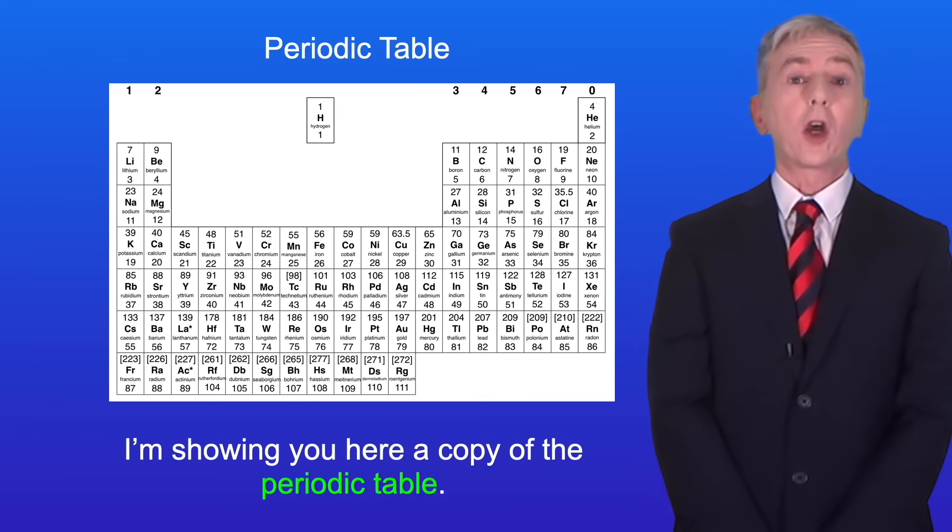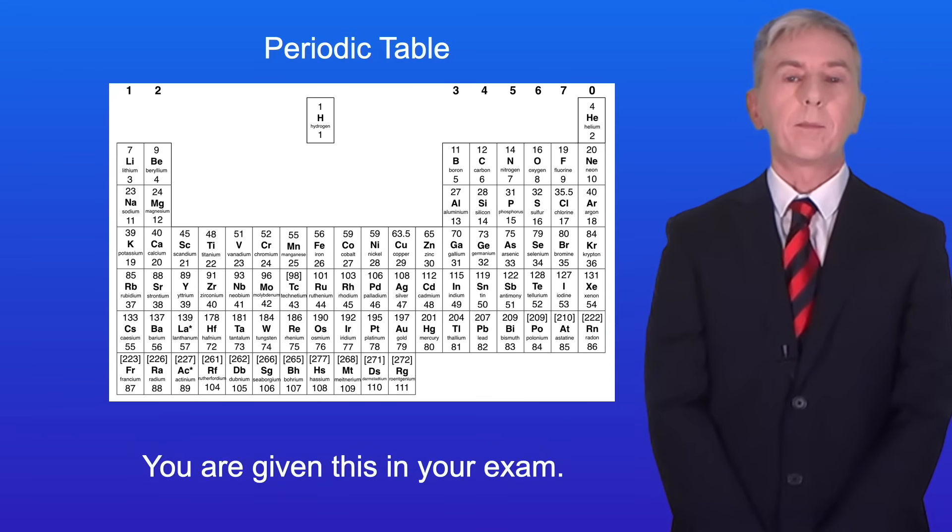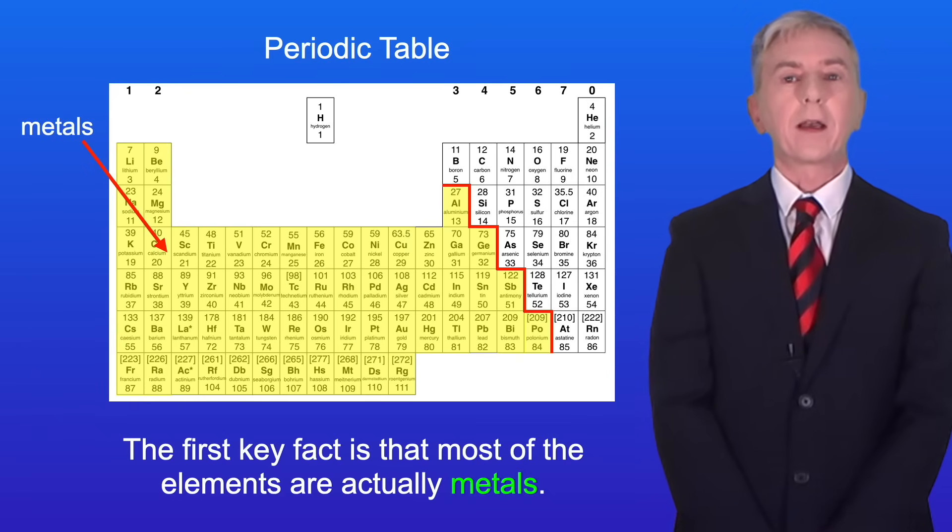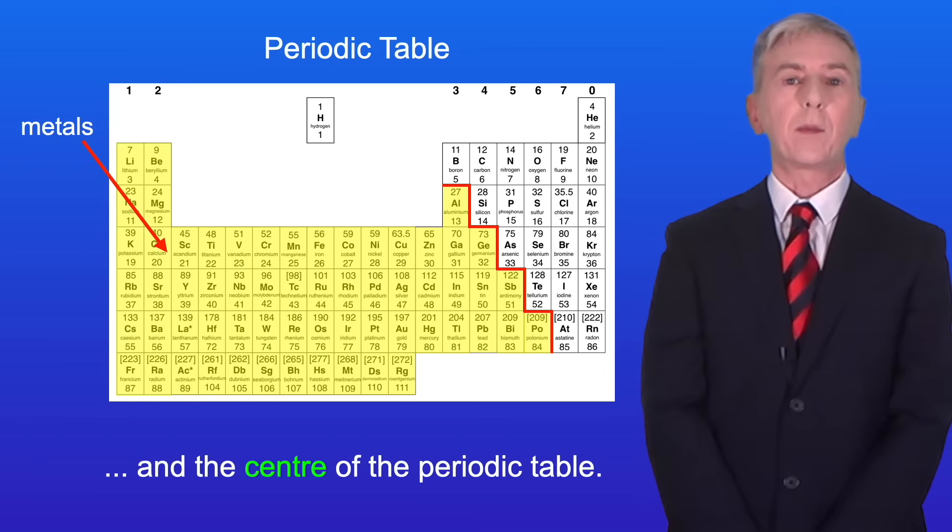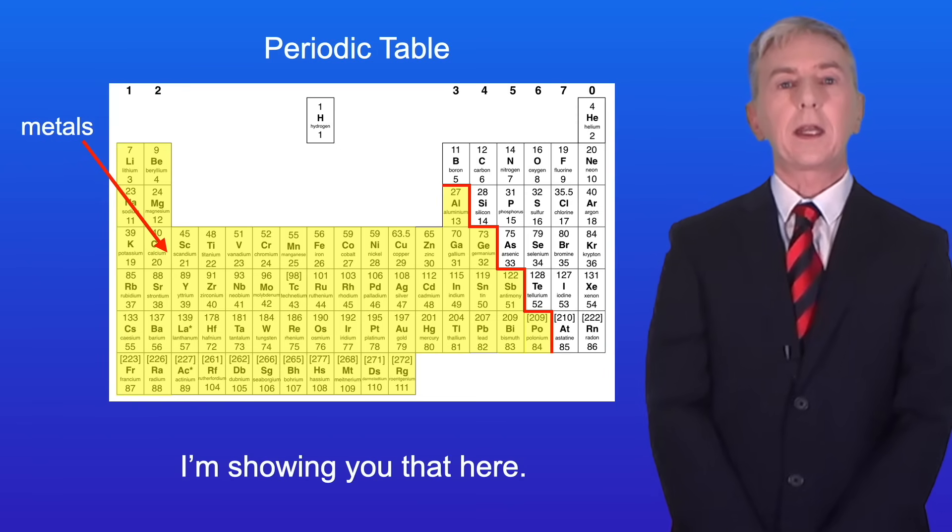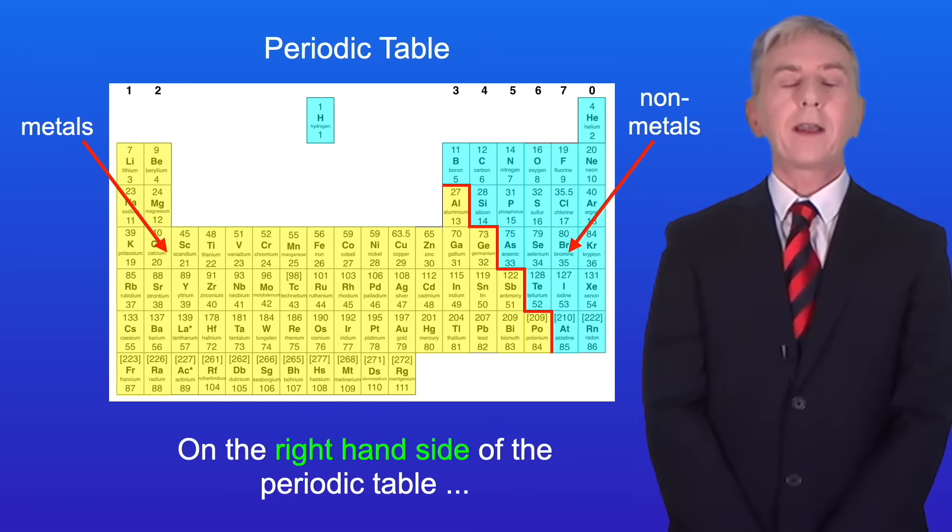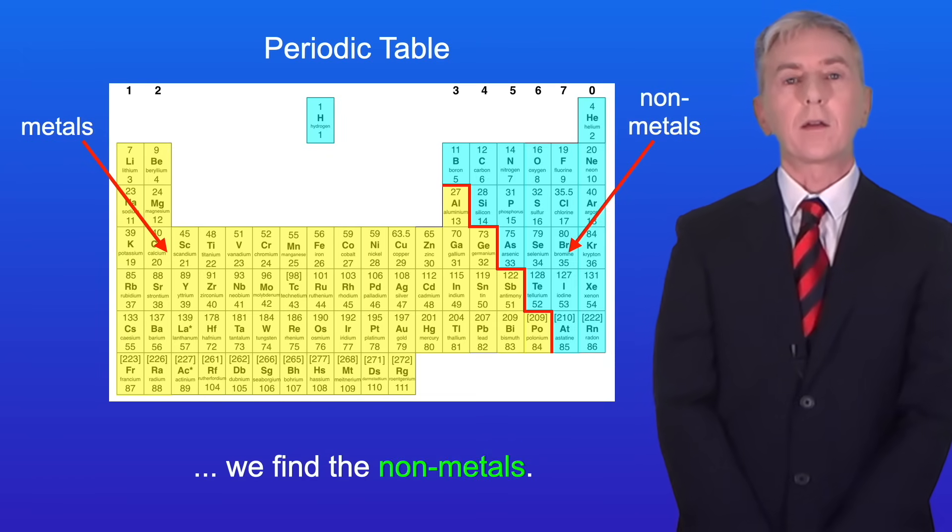I'm showing you here a copy of the periodic table and you are given this in your exam. Now the first key fact is that most of the elements are actually metals. We find the metals on the left and the center of the periodic table and I'm showing you that here. On the right hand side of the periodic table we find the non-metals.